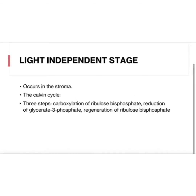The light-independent reactions occur in the stroma, and the whole process is called the Calvin cycle. There are basically three steps: carboxylation of ribulose bisphosphate, reduction of glycerate 3-phosphate, and regeneration of ribulose bisphosphate.